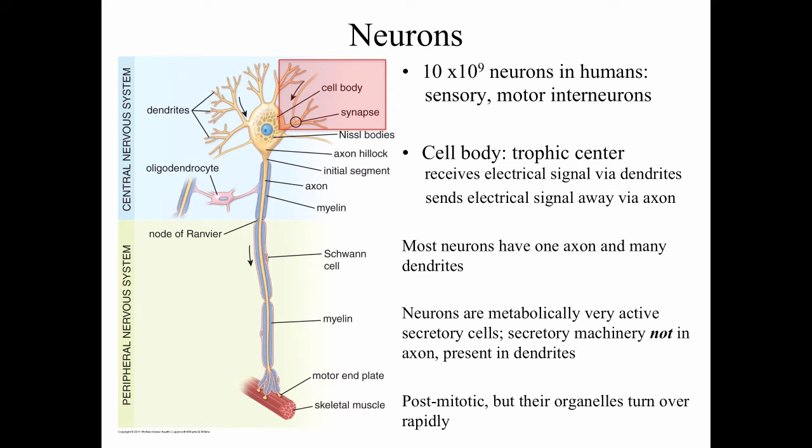Most neurons have one axon and many dendrites. Neurons are metabolically very active cells — they're secretory cells, in fact very highly active as secretory cells. The synthetic machinery for secretion is not present in the axon; it is present in the cell body and even in the dendrites. Neurons are post-mitotic cells, so by and large they don't divide.